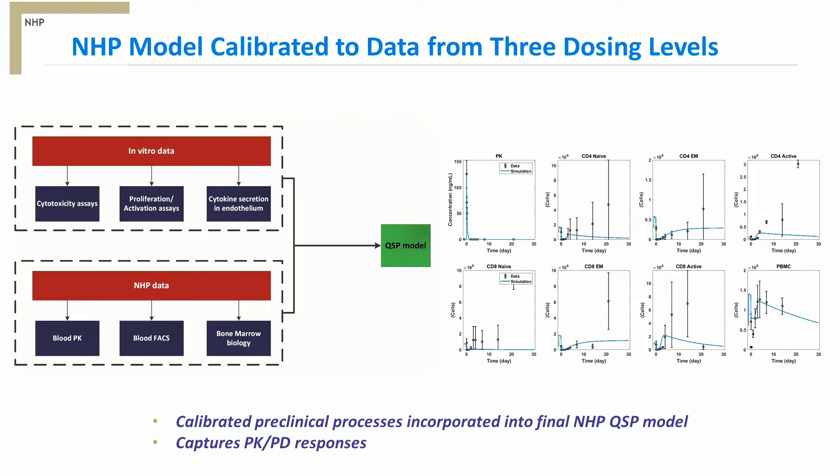Representative plots are shown to the right, where we depict alignment of our simulated responses — shown by the solid blue lines — with that of the measured data illustrated by the open circles with error bars. In addition to the drug PK, our model captures the characteristic initial rapid decline of T cells and their subsequent rebound following T-cell engager treatment.